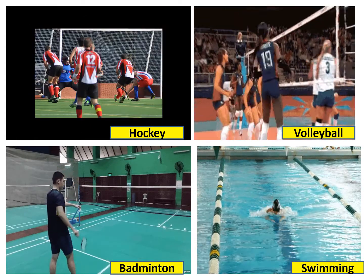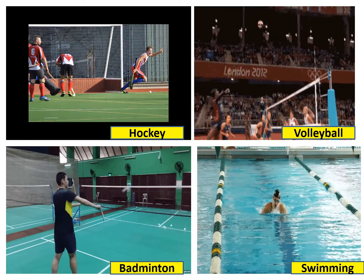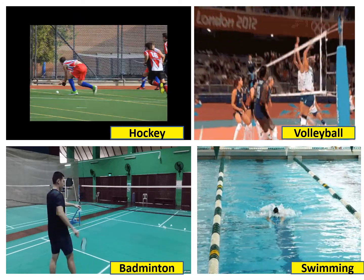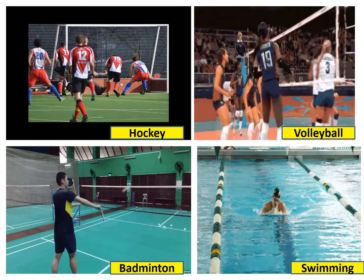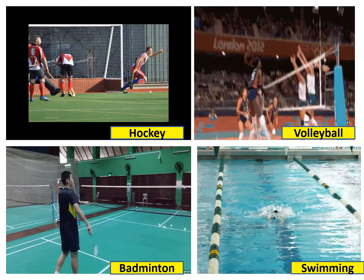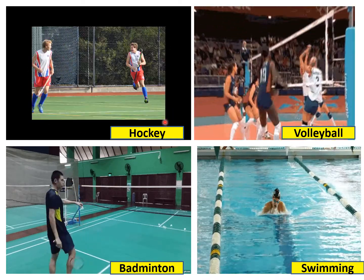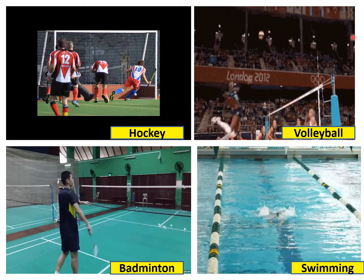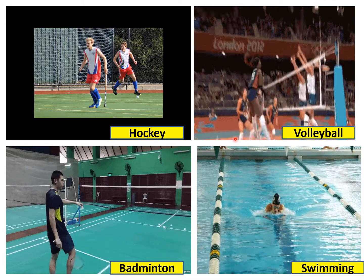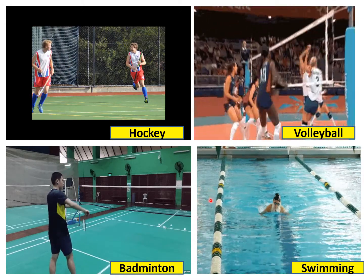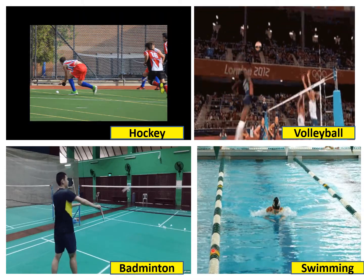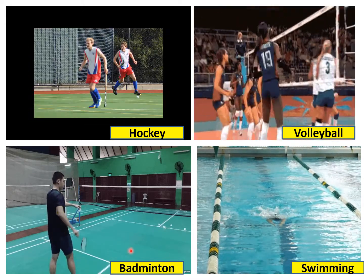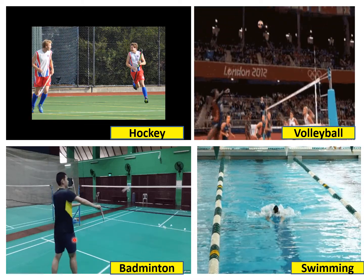Now on page 34 there are some sports which you have to identify. I will show you the games again. Hockey — you can see there is a stick in their hand and they are playing with a stick, which is called hockey. Then this is volleyball — they throw the ball from one court to another court. Then badminton — there is a shuttlecock in one hand and a person throws the shuttlecock with the help of a badminton racket.